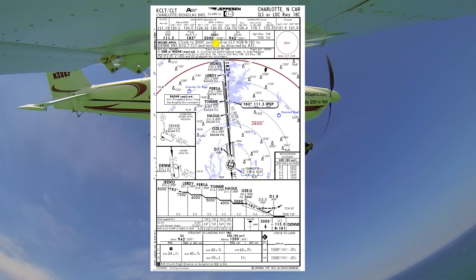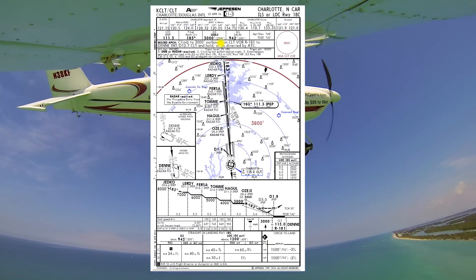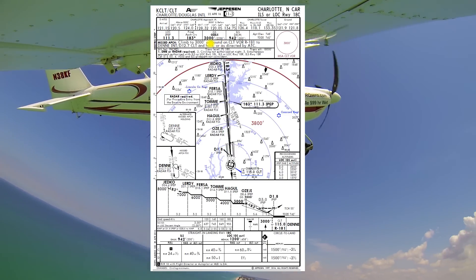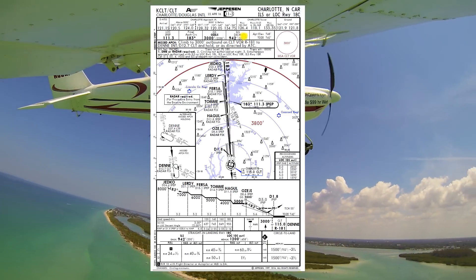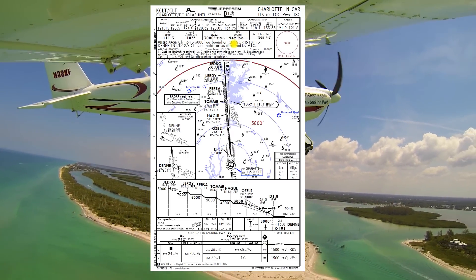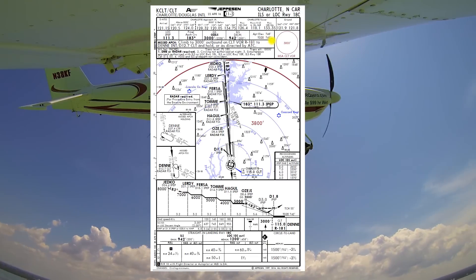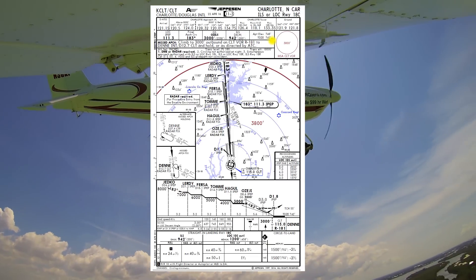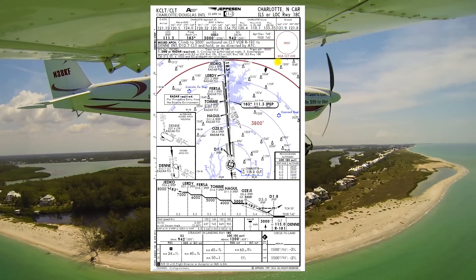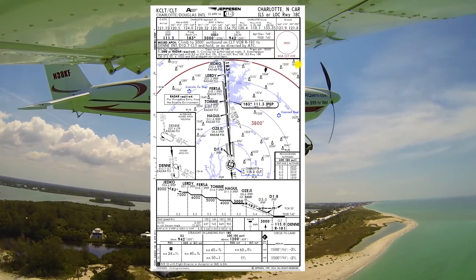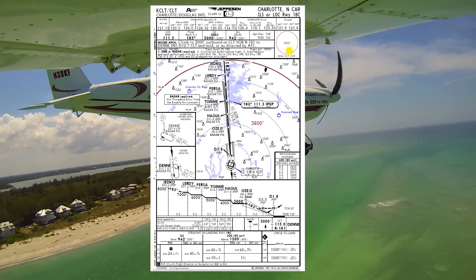Glide slope intercept at OZG, 3000 feet — or minimum at OZG 3000 feet, however you want to think about it. ILS DA is 942, 200 feet AGL. Airport elevation 748 feet, touchdown zone elevation 742 feet. MSA based off the Charlotte VOR, 3800 feet, all quadrants.